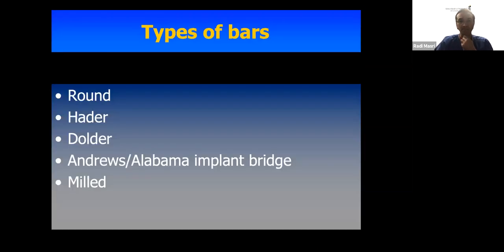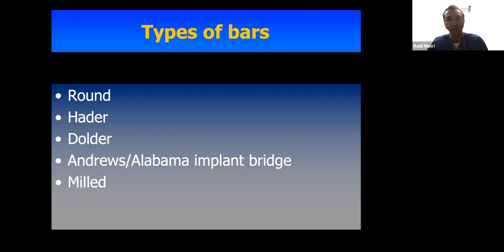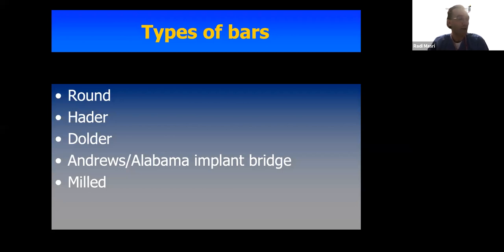When we look at types of bars available, there isn't really a good classification in the evidence-based literature. The classification I present is personal, just to make the lecture easier. There is a round bar, a Hader bar, a Dolder bar, an Andrews or Alabama bridge bar — where Andrews refers to use with natural teeth and Alabama implant bridge refers to use with dental implants — and finally the milled bar, which is the most contemporary option today.